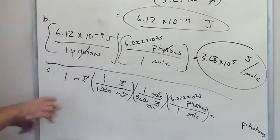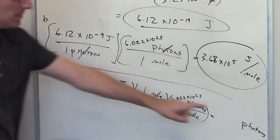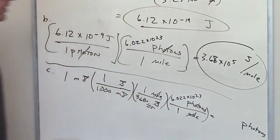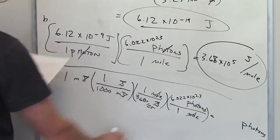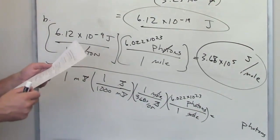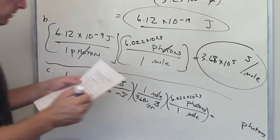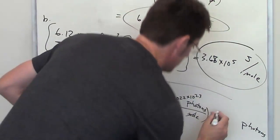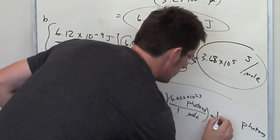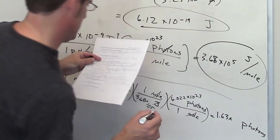From this point it's just plug and chug, and that gives me the number of photons in one millijoule burst of this radiation. Throwing that into my calculator, the answer ends up being 1.63 times 10 to the 15th individual photons.